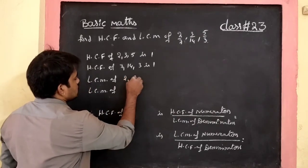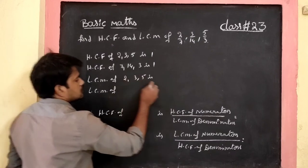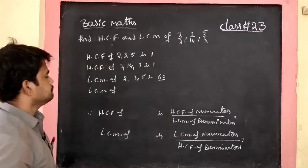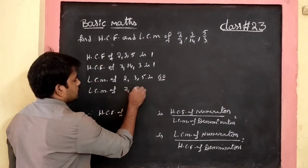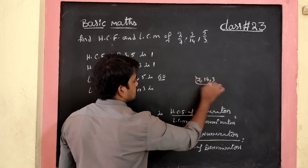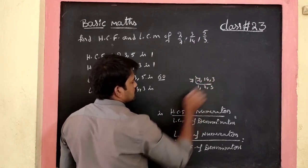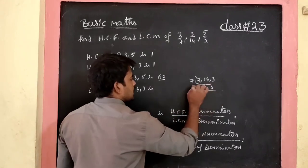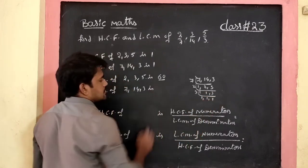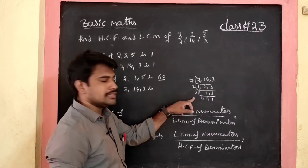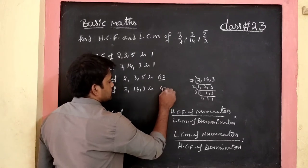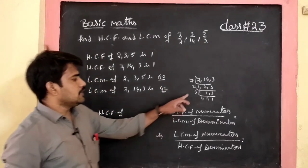LCM of numerators 2, 3, 5 is 2 × 3 × 5 = 30. Now LCM of denominators 7, 14, 3: dividing by 7 gives 1, 2, 3; dividing by 2 gives 1, 1, 3; dividing by 3 gives 1, 1, 1. So LCM is 7 × 2 × 3 = 42.